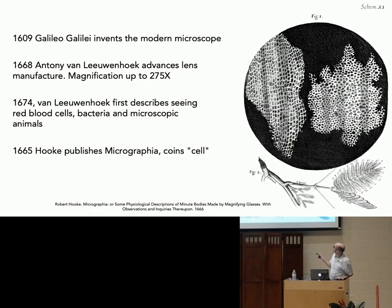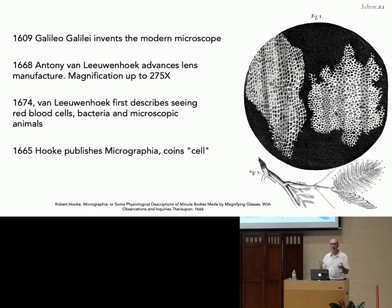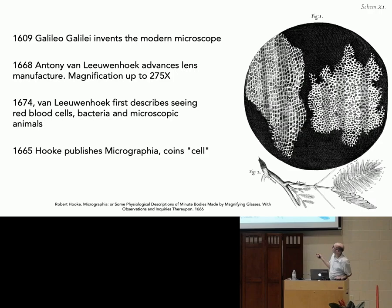Anthony van Leeuwenhoek from the Netherlands figured out how to make lenses really well — he sort of advanced the art of making lenses, and as a result was able to magnify objects much more than people previously could. He got his lenses up to a magnification of 275 times. Around 1668, as soon as he started doing that, he was looking at all sorts of things under the microscope. He found red blood cells, bacteria, and microscopic animals which he called animacules.